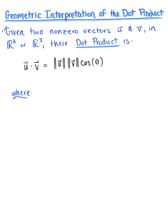Here, theta is the angle between the vectors — the angle between vector u and vector v. If we think about this graphically, here is some vector u and here is some vector v, and they must share the same initial point.